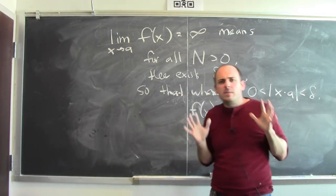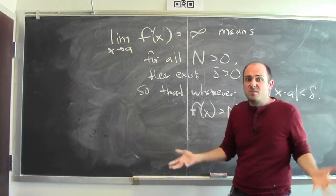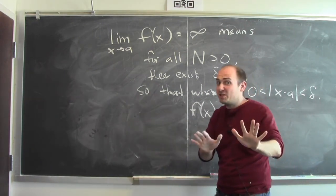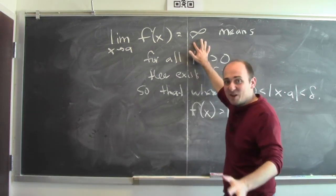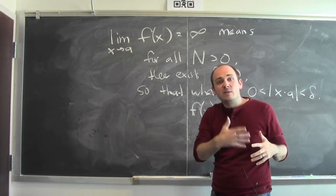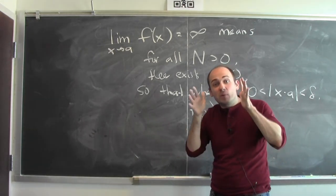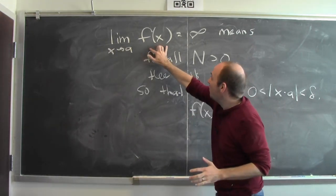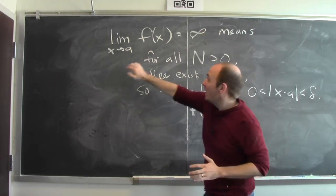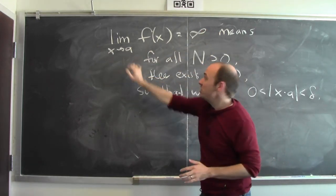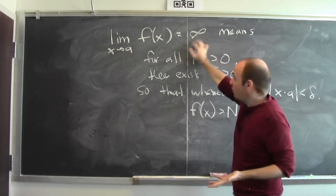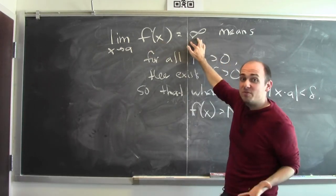What does it mean to say that a limit equals infinity? Well, it doesn't mean much at this point because infinity is not a number. So far, we've defined what it means for a limit to equal a number L — it means I can get f(x) close to the limit by choosing x sufficiently close to A. But infinity is not a number, so how can I get f(x) close to infinity?